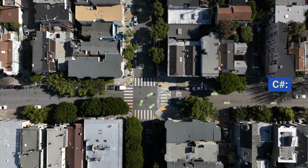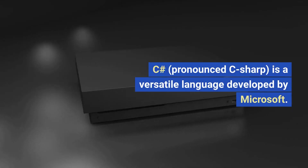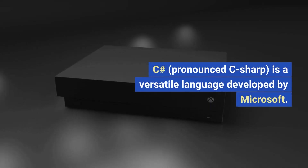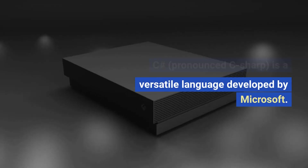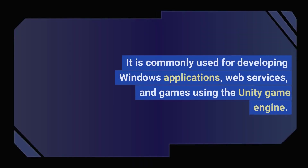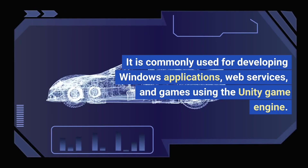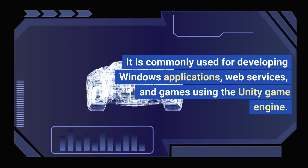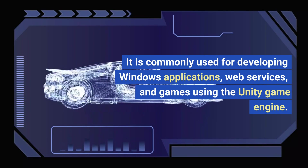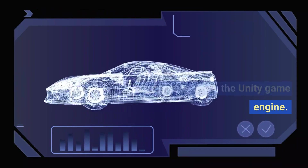Fifth, C#: C#, pronounced C-sharp, is a versatile language developed by Microsoft. It is commonly used for developing Windows applications, web services, and games using the Unity game engine.